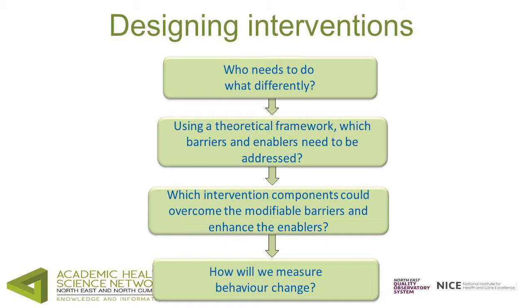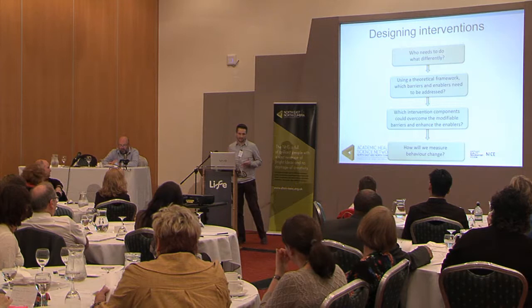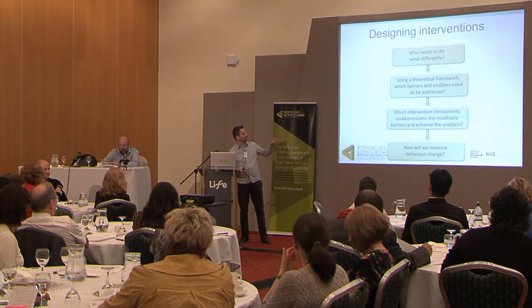The process starts with identifying who needs to do what differently, then using a theoretical framework to identify barriers and enablers. Only then can we look at which intervention components could overcome those barriers and enhance the enablers if they're modifiable, and identify how to actually measure that particular behavior change. This emphasizes the danger of jumping straight to what we think might be helpful rather than following this more systematic approach, which builds a cumulative evidence base and strengthens the likelihood that the intervention actually works.